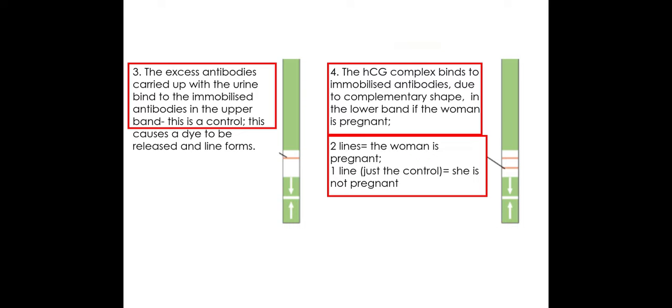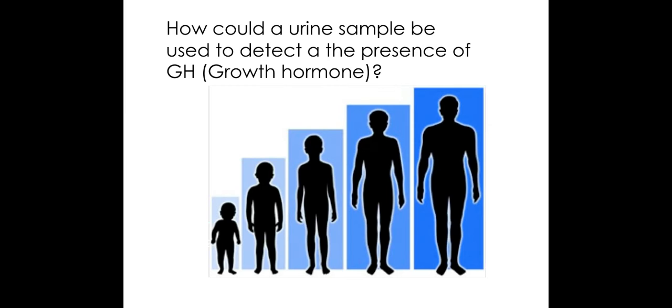If the control line doesn't show up but the pregnancy line does, the test is invalid and you would need to do another one.